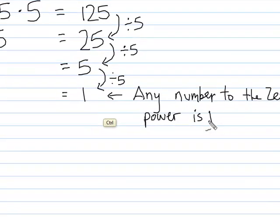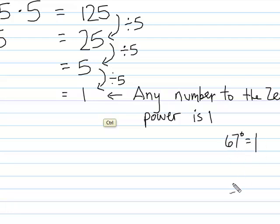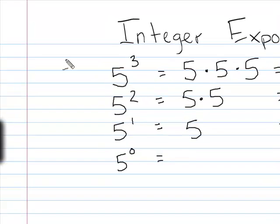In fact, any number to the zero power is one. For example, sixty-seven to the zero power is one, and one hundred twenty-three to the zero power is still one — no matter what the base is, it's going to be one. Now let's continue with this pattern, because now we're going to get into negative exponents.